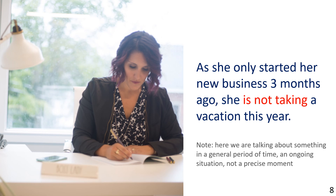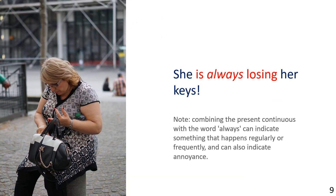The picture shows a woman searching in her bag. The example reads: She is always losing her keys. Note: combining the Present Continuous with the word always can indicate something that happens regularly or frequently, and can also indicate annoyance.